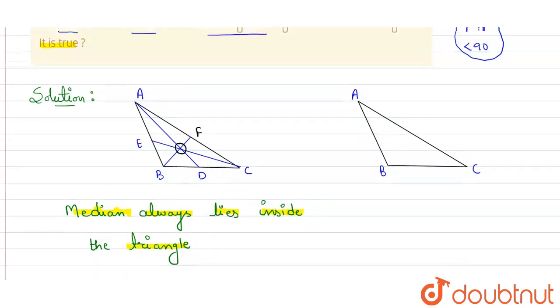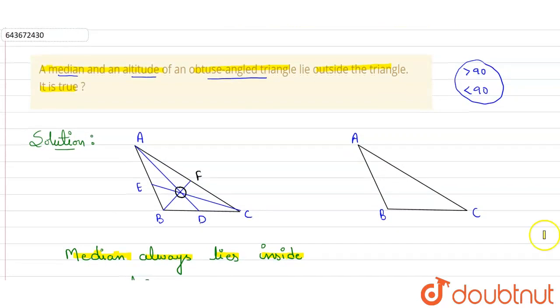Now we have to check for altitude. So altitude, let me tell you, is a line that starts from the vertex and meets the opposite side at 90 degrees, at a right angle.